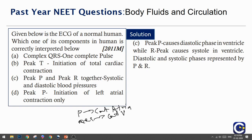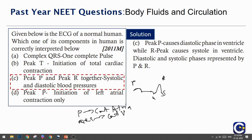Peak P and peak R together represent the systolic and diastolic blood pressure. So the answer is option C: peak P and peak R together represent systolic and diastolic blood pressure.